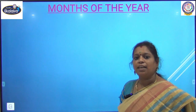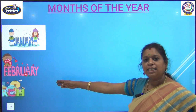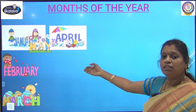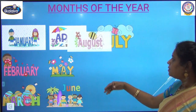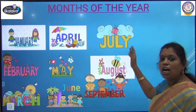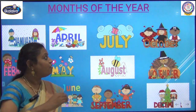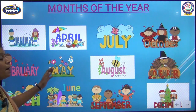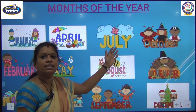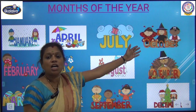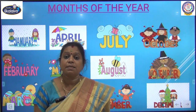Now we will read the months of the year: January, February, March, April, May, June, July, August, September, October, November and December. There are 12 months in a year. These 12 months make a year.